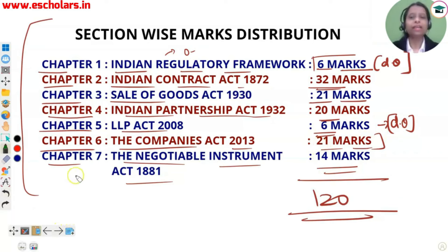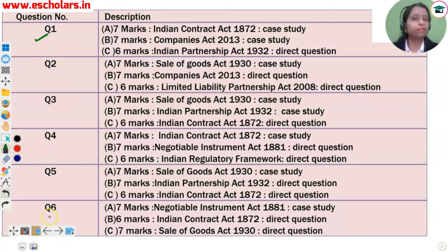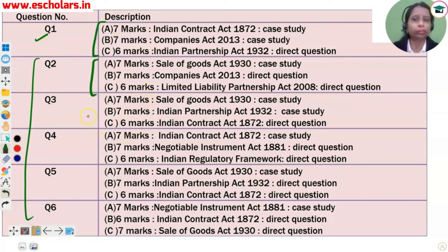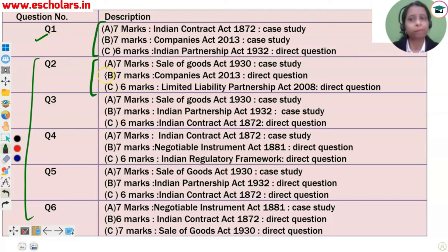Here come the details which are very relevant to your exam. You will get 6 questions. Question number 1 will remain compulsory. There will be 4 questions in the rest, from Q2 to Q6. All questions will be 20 marks each. All questions will come in 3 parts — A, B, C. Question 1: A part is 7 marks, B part is 7 marks, C part is 6 marks. Questions 2 through 5 are the same — 7, 7, 6. Question 6 has a small twist.